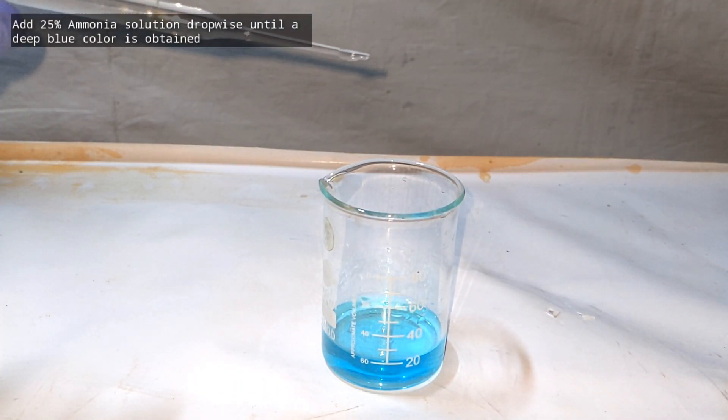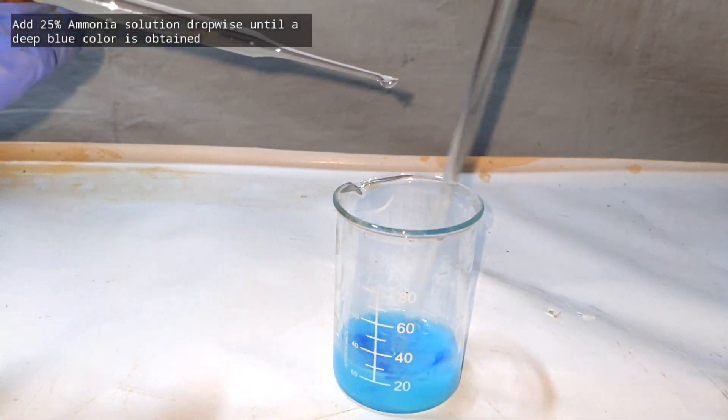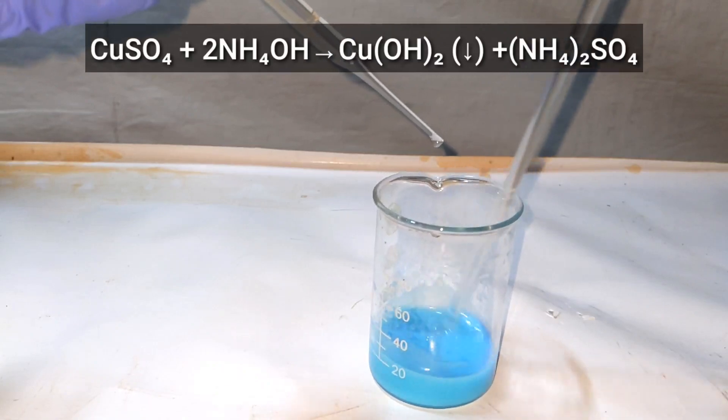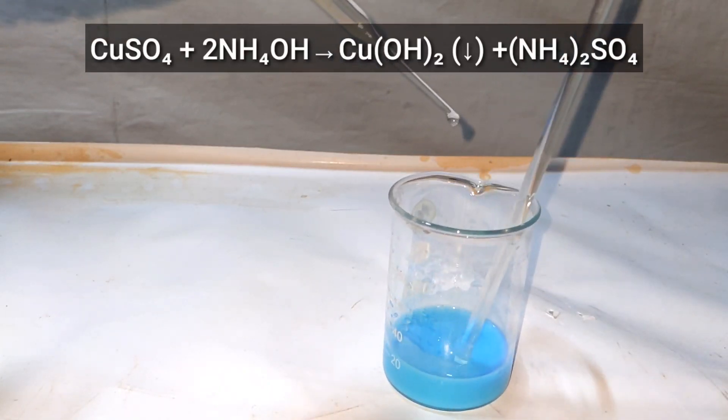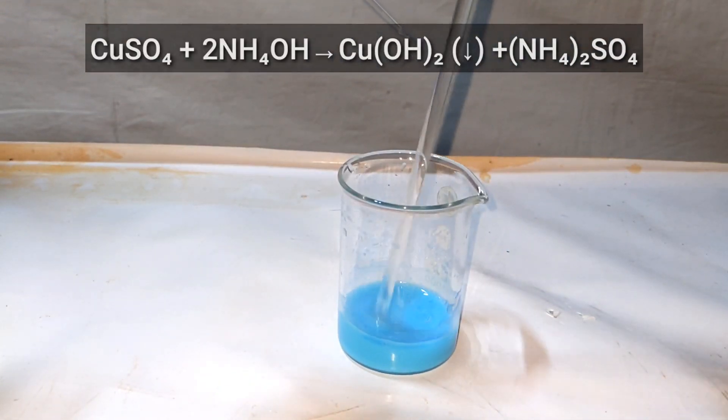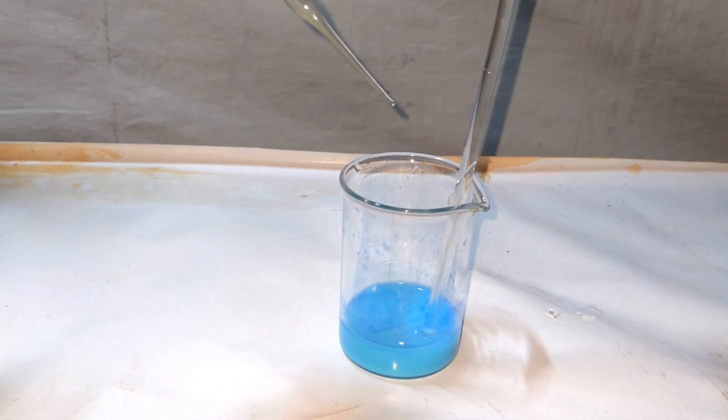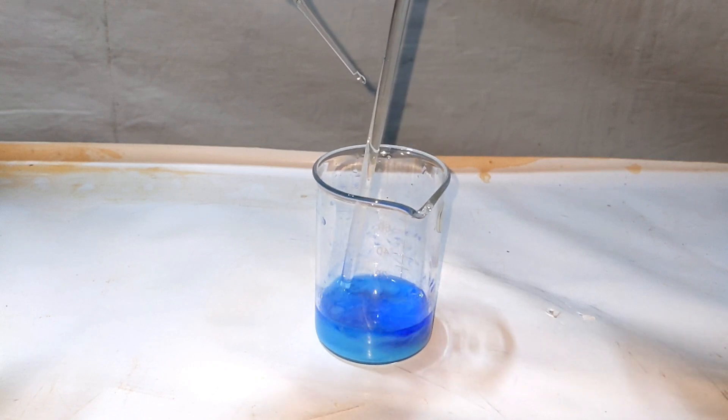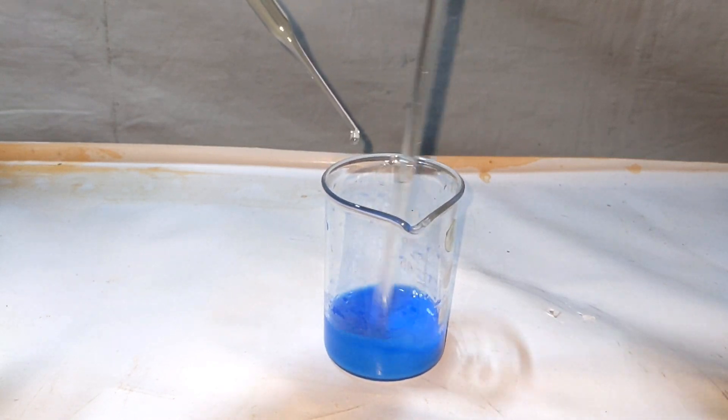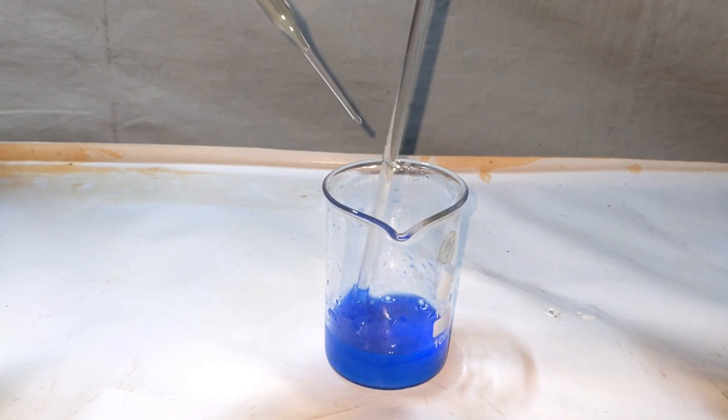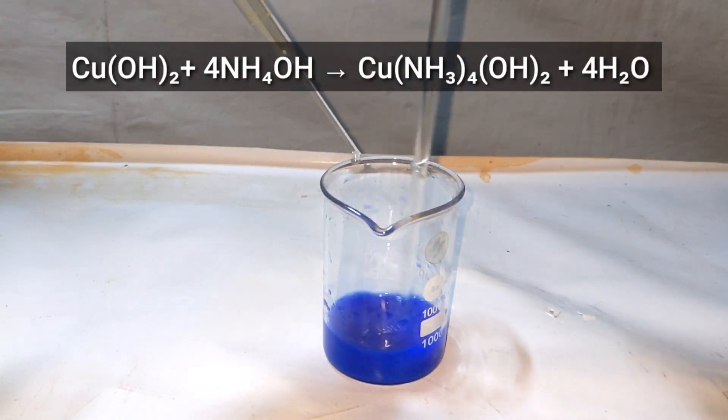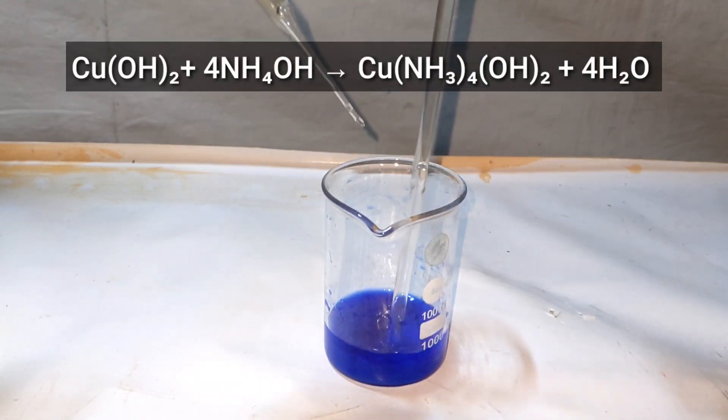Once it is all dissolved, add 25 percent ammonia solution dropwise with stirring. Initially a light blue precipitate will be formed, and that is copper hydroxide. Keep adding ammonia until it becomes excess. Slowly you will notice that the copper hydroxide precipitate starts to dissolve and the solution acquires a deep blue color. This is the solution of the complex tetra amine copper 2.